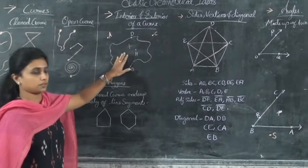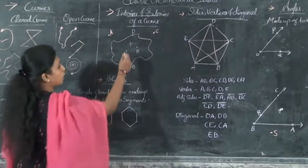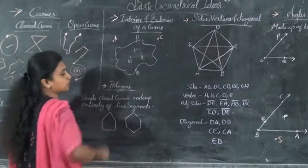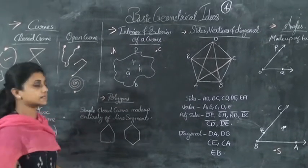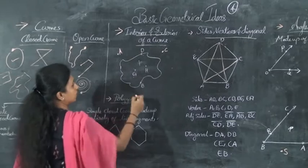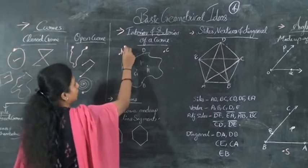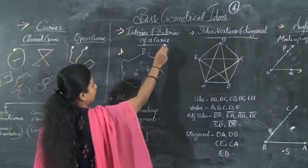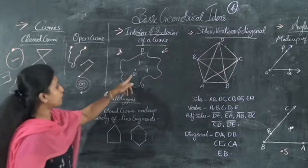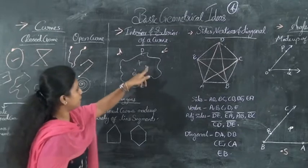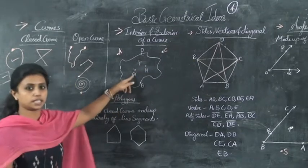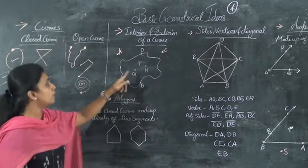These all are the interior points of the curve. What about the exterior points? That is outside the curve. Point A and point C are the exterior points of the curve. Point G, F, and point H — all these are interior points of the curve.